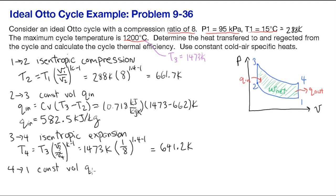From state 4 to state 1 we treat that as a constant volume heat removal. So we can do that by multiplying CV by the temperature difference.